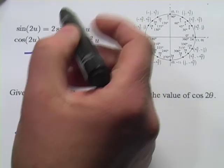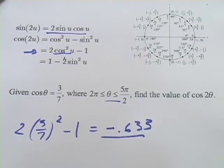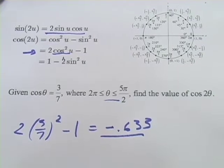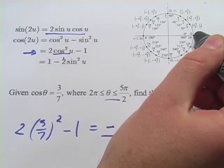So remember with the sine we only have one formula and you need the sine and the cosine for that one. So we're going to have to find our cosine. And they've said that it's between 2π and 5π/2. Well here's 2π, right?